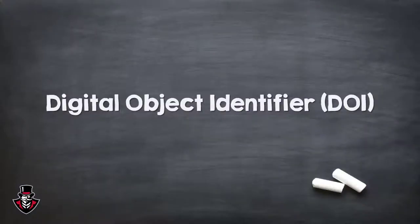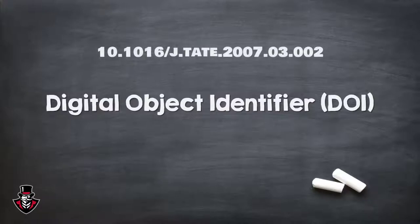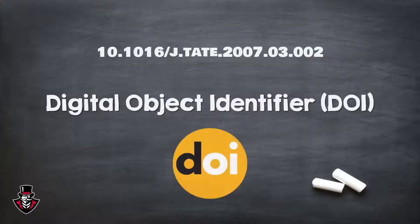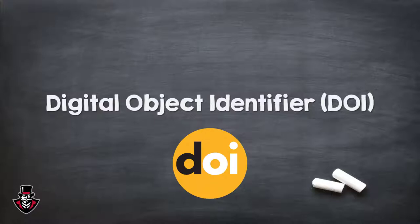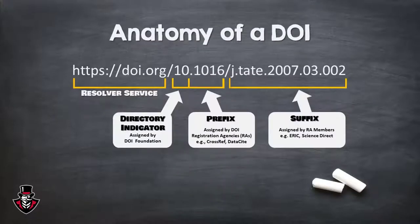A Digital Object Identifier, or DOI, is a unique alphanumeric string assigned by the International DOI Foundation to identify content and provide a persistent link to its location on the internet. They come in handy when doing academic research, eliminating the need to type out database names and long URLs.